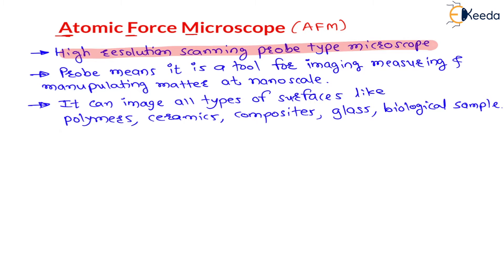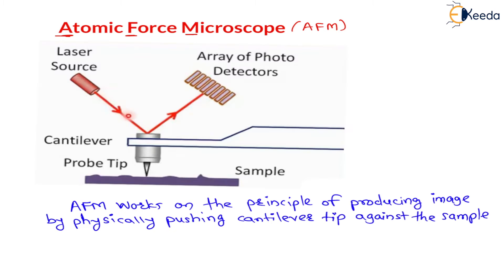Let us understand the diagram. Here is the schematic diagram of the AFM, that is the atomic force microscope. You can see there is a laser source from which laser light is coming — this is an incident light.